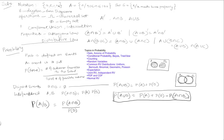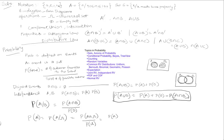B has occurred, and A and B have occurred given that B has occurred. In general, when we talk about the probability of any event A, it is in some ways a conditional probability also — the probability of A given that all probable events can occur, which equals 1. This is really the probability of A intersection the universal set, divided by the probability of the universal set, which is 1. And the probability of A intersection the universal set is just the probability of A.